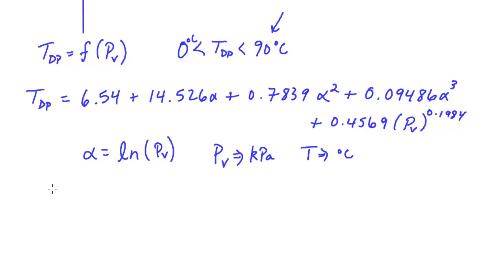If your dew point temperature is less than zero degrees C, we have a different formula. And so we have two formulas. And at this point, we can very easily solve for the dew point temperature given the partial pressure of vapor.